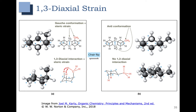In the anti-conformation, we have less steric strain because there are none of those 1,3-diaxial interactions. So that means that having that methyl group in the equatorial position is favored or lower in energy. And in general, we see that trend when we have larger groups in equatorial positions. This is associated with less strain, and these conformations are typically preferred.